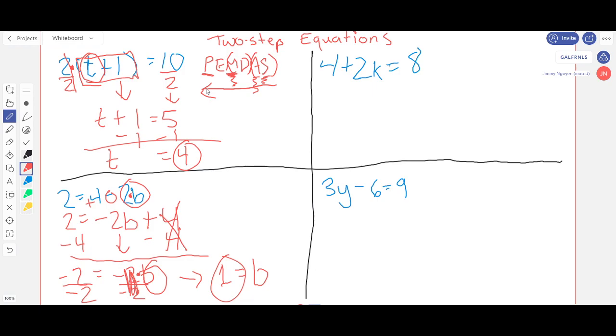Over here, same thing. It helps to have the variable first by using the commutative property, so I'm going to swap these two like that. And then we have multiplication and addition again. Addition comes first if we're going this way with the order of operations, that means I need to take care of that first.